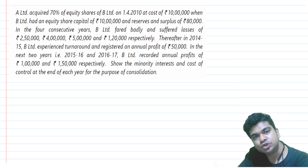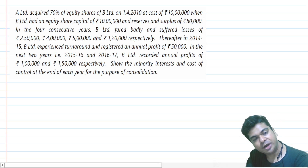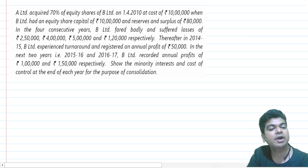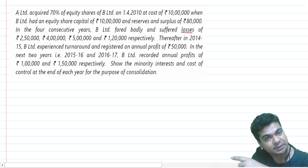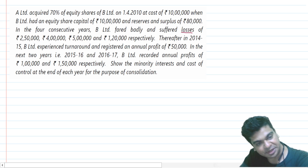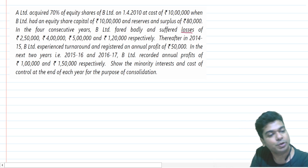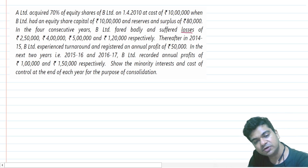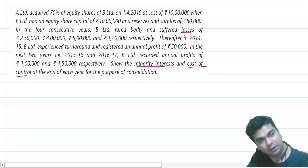Let's solve a question based on negative minority interest. B Limited acquired 70% of equity shares of B Limited on 1st April 2010 at a cost of rupees 10 lakhs, when B Limited had an equity share capital of rupees 10 lakhs and reserves and surplus of 80,000. In the four consecutive years, B Limited fared badly and suffered losses — that may be the reason the minority interest turns out to be negative. In 2014-15, B Limited experienced a turnaround and registered an annual profit of rupees 50,000. In the next two years, B Limited recorded annual profits. We are supposed to calculate the minority interest and cost of control at the end of each year for the purpose of consolidation.